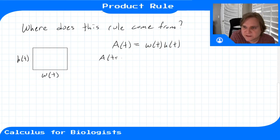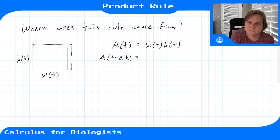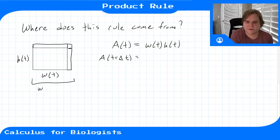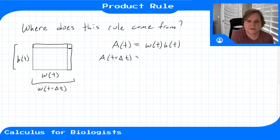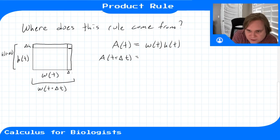Let's say at time t plus delta t, this rectangle grows a little bit in the width and a little bit in the height, so now the box is a little bit bigger. The new width is w of t plus delta t, and the new total height is h of t plus delta t. These little slivers have height delta h and width delta w.